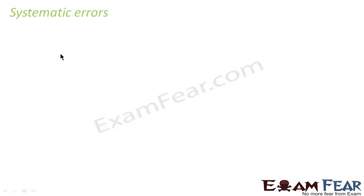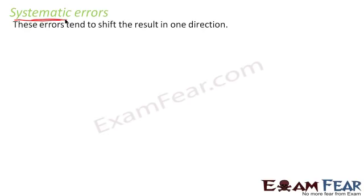Let us discuss systematic error. The term systematic means something which is organized, something which happens very systematically. Systematic errors tend to shift the result in one direction — that means the actual result gets shifted from its true value in a particular direction. If the value increases, it keeps increasing; if it decreases, it keeps decreasing. Once I discuss the categories and examples, it will be very clear.